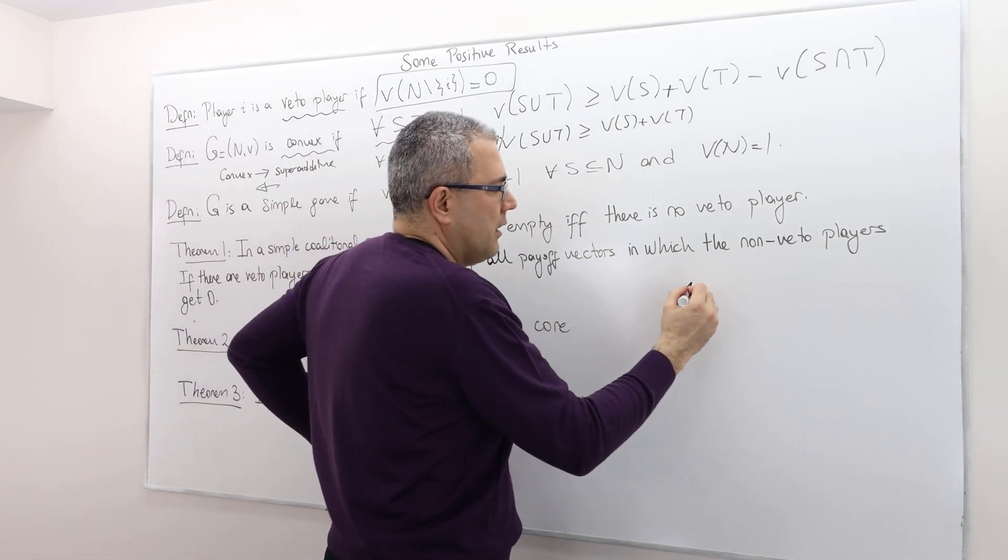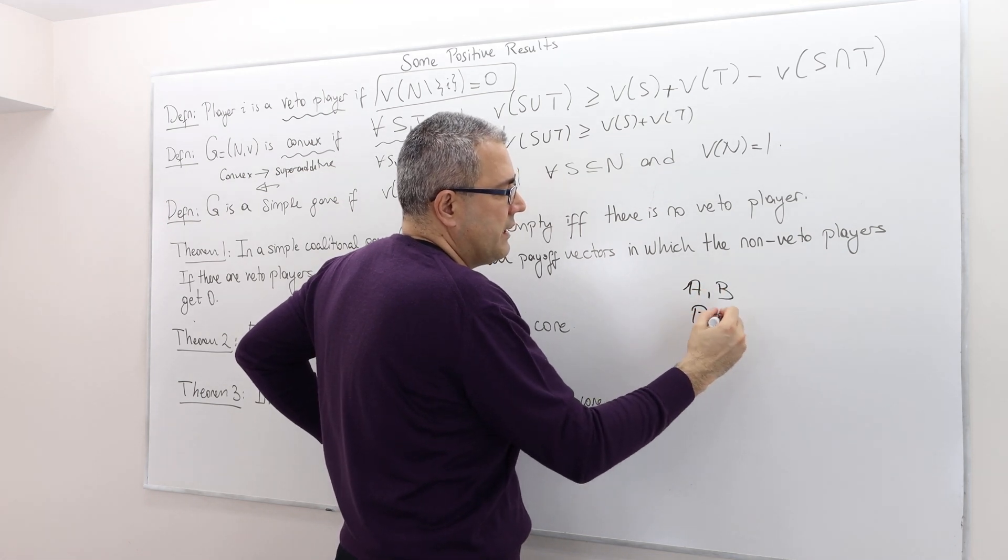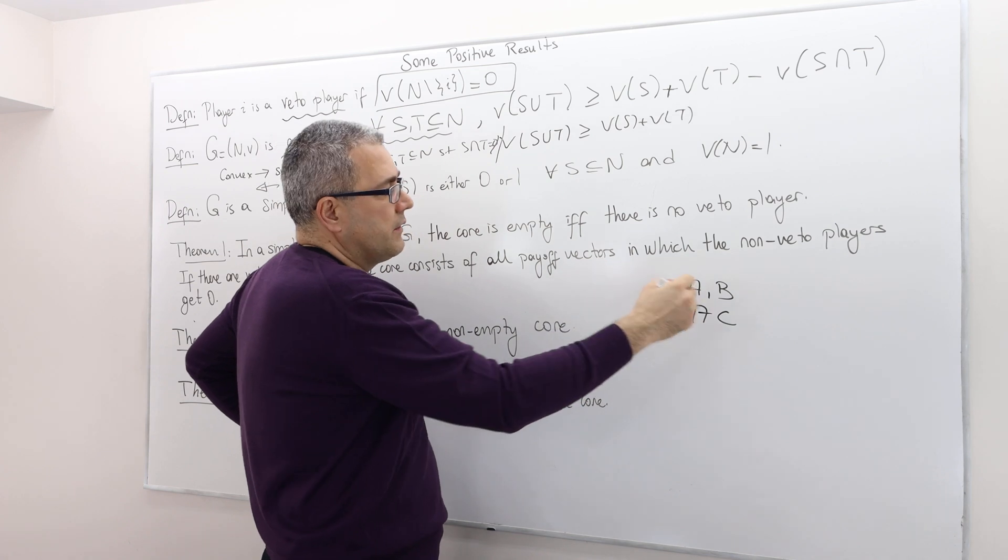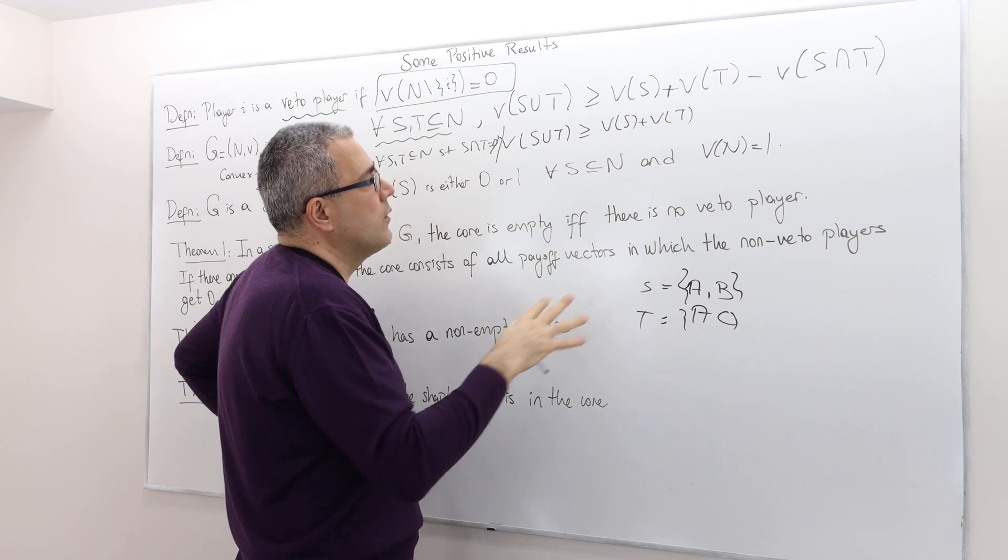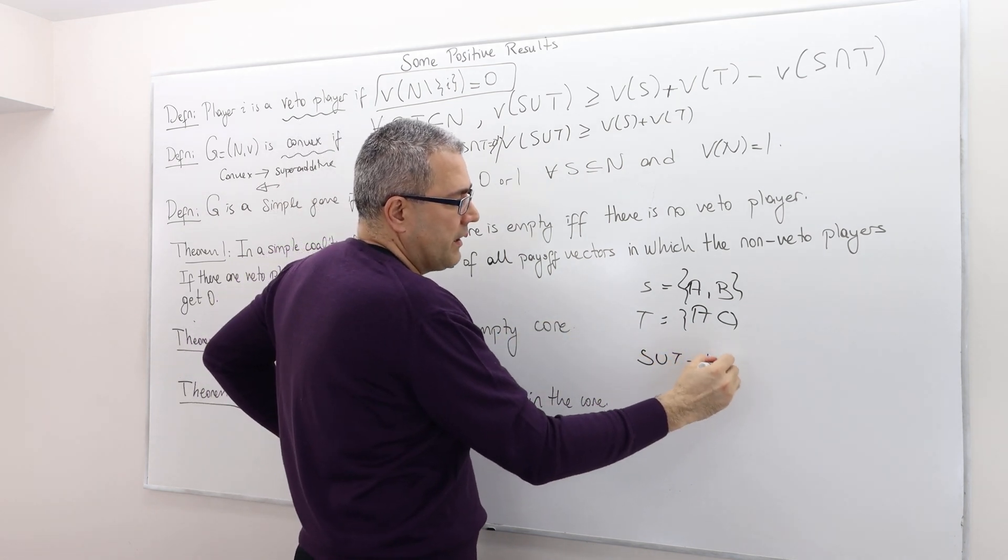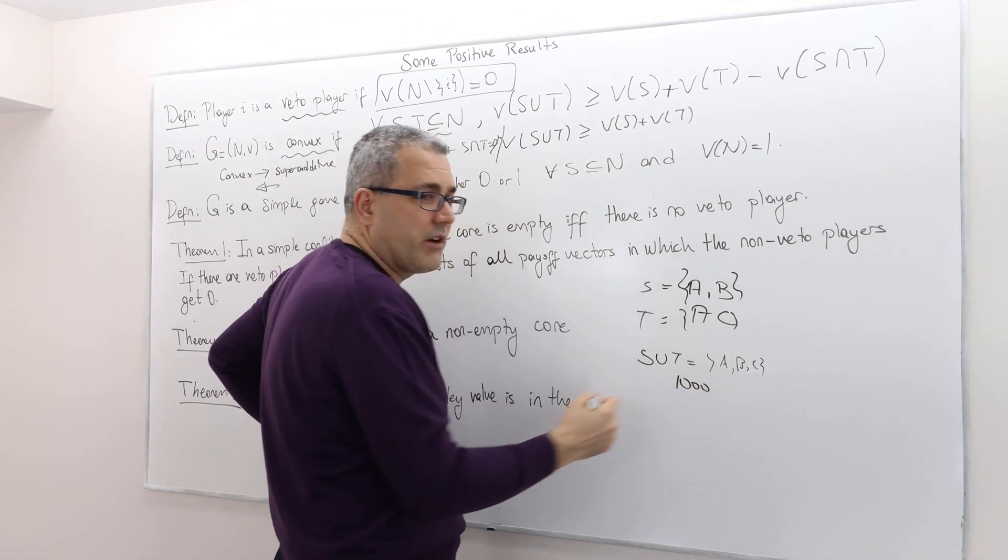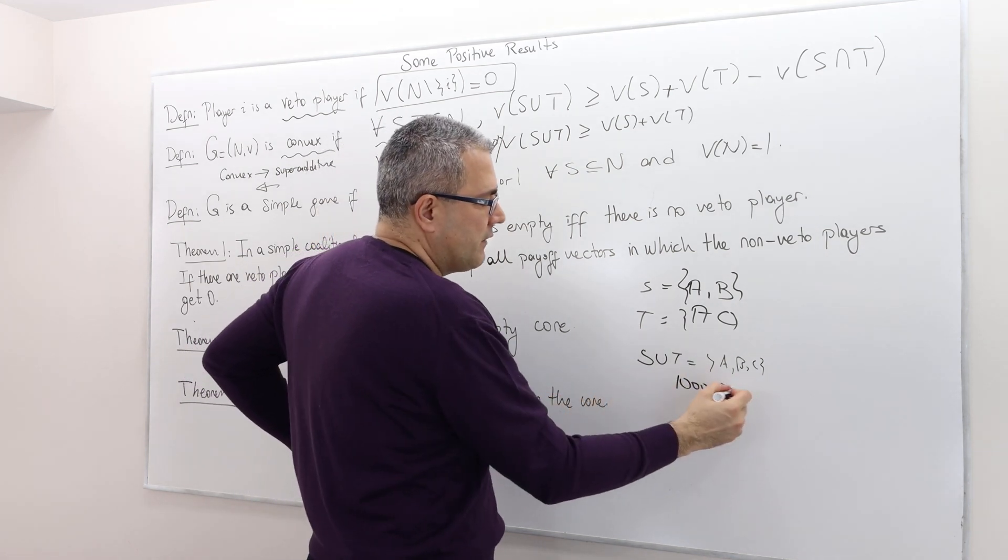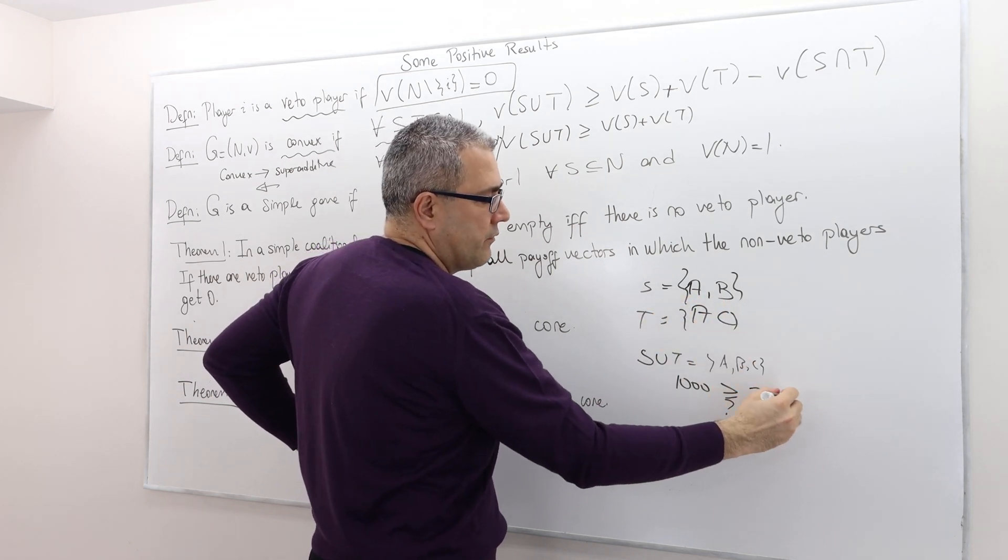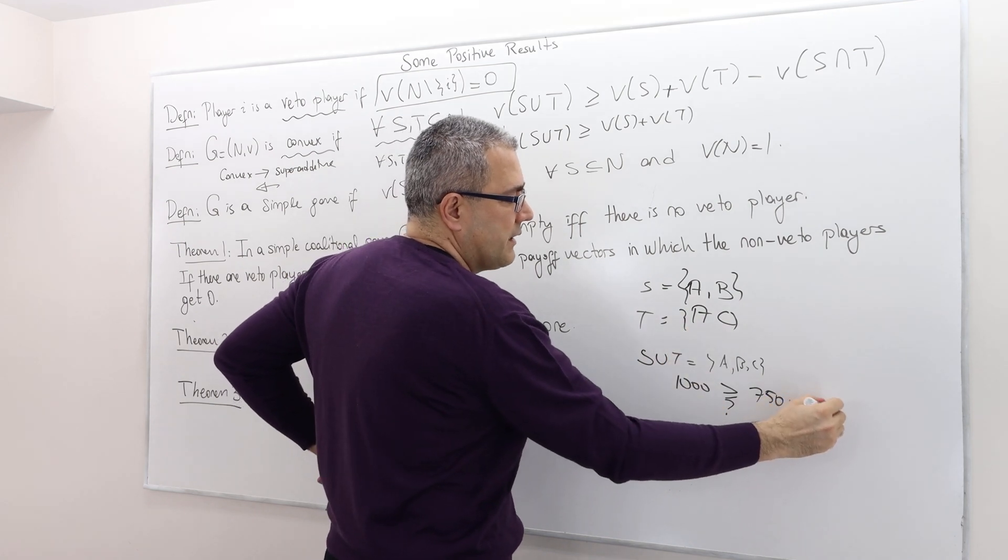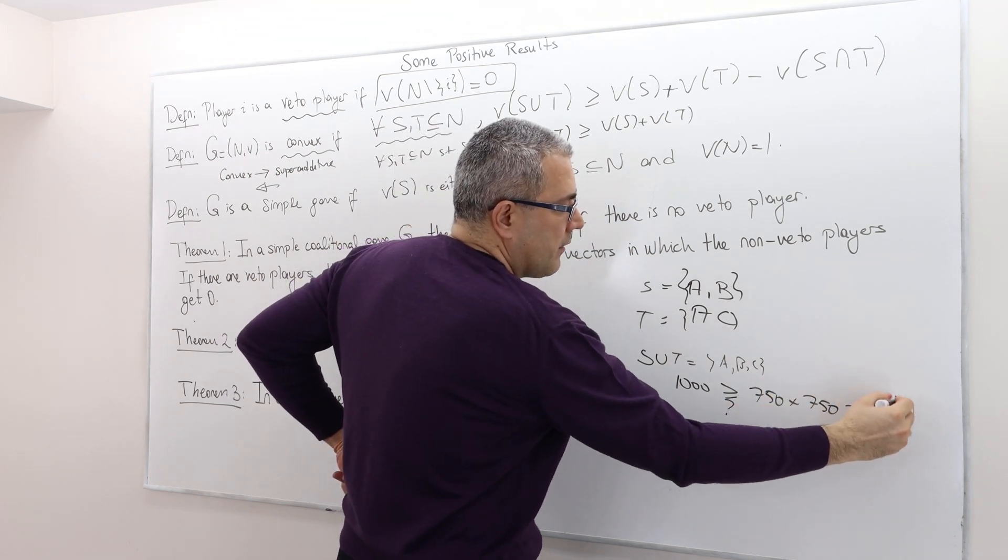Well, consider the coalition player A, B, and then player, I don't know, A, C. So this is S and this is T. So what is S union T, which is A, B, C? What is the worth? Remember, they can buy 1,000 gram of ice cream. Is this greater than or equal to V of S, which was 750, if you remember, plus V of T, which was again 750, minus the intersection, V of A. Well, what was the V of A? It was zero.